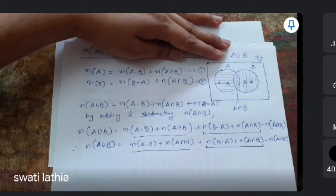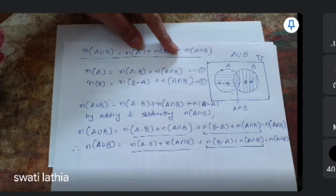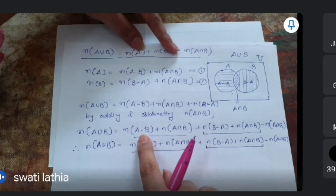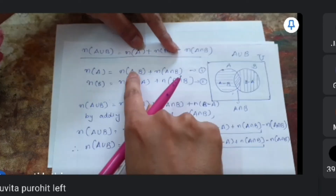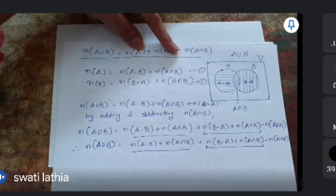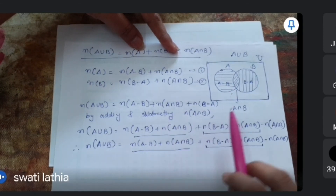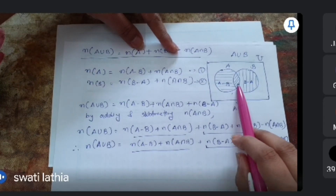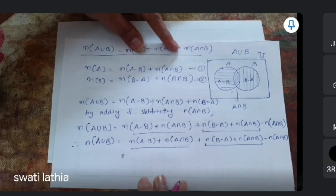હવે આપણે ઉપર બે equations બનાવ્યા — A નું અને B નું. Equation: a minus b plus a intersection b હોય તો n of a કહેવાય. Venn diagram માં a-b ભાગ plus a∩b ભાગ — બંને ઉમેરીએ તો આખું circle A આવે, એટલે n(A) કહેવાય.